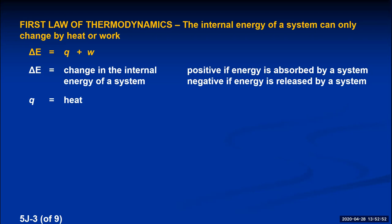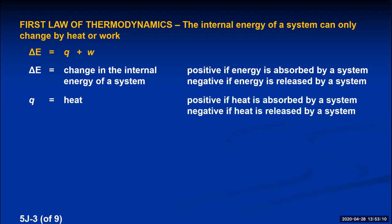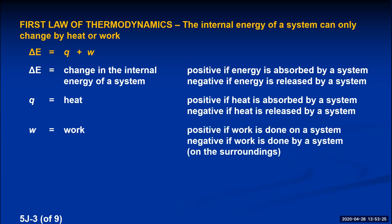Q is the amount of heat the system gives off or absorbs. Q is positive if heat is absorbed by the system, and negative if heat is released. Work is abbreviated W, and the sign convention is similar: W is positive if work is done on the system, and negative if work is done by the system — meaning it's done on the surroundings.